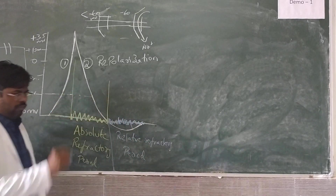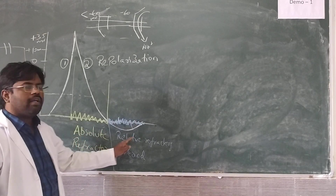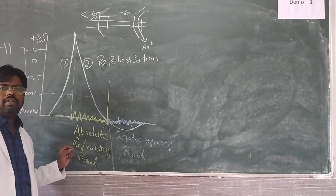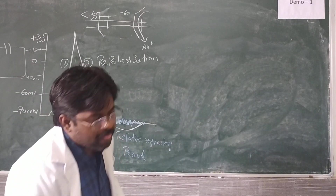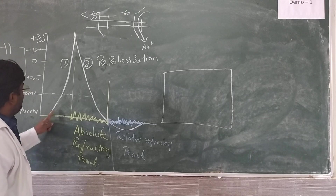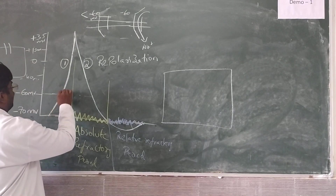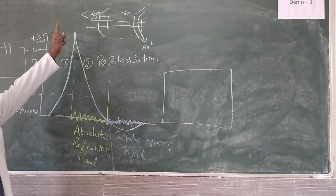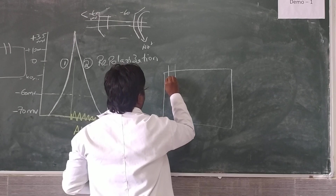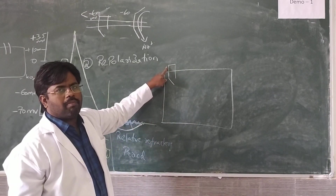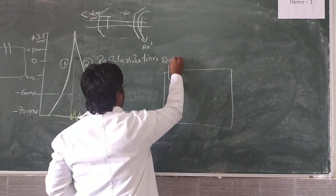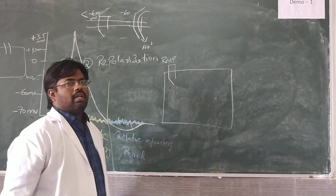If you observe the mechanism of the action potential discussed, during the phase of depolarization the cell attains positivity. At resting membrane potential, the active gates will be closed initially and the inactive gates will be open. This is the resting membrane potential, so there is no positive or negative amplitude we see.